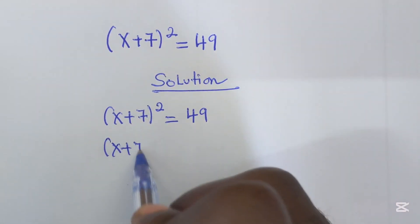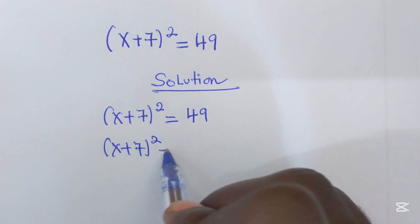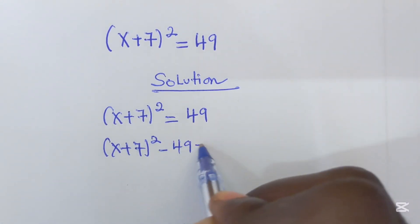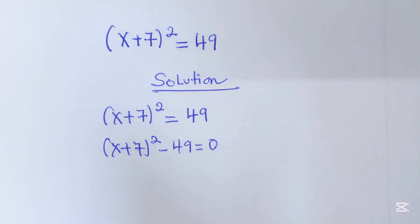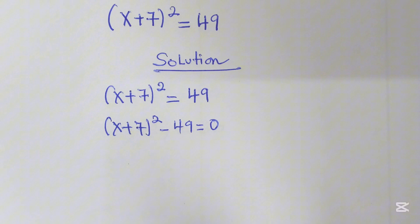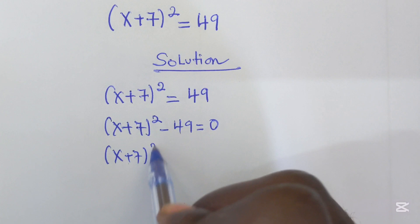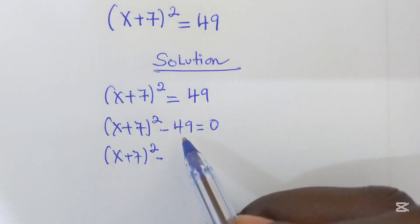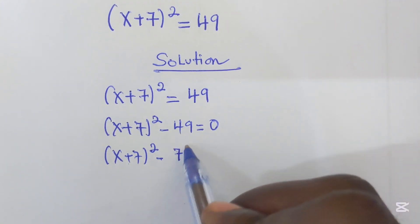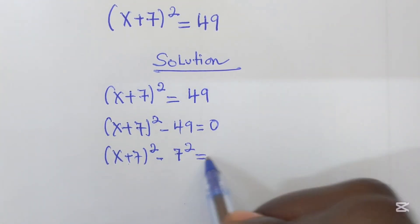This can be rewritten as (x+7)² - 49 = 0. Now here we have to take (x+7)² and change this number 49 to 7², which equals 0.